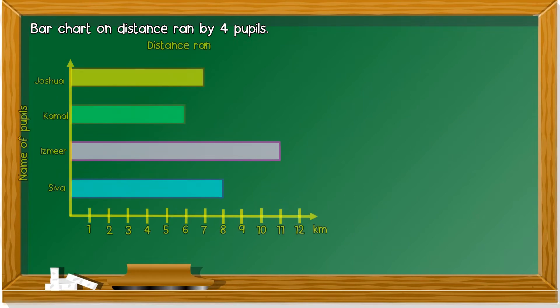Okay class, let's take a look at this bar chart. This bar chart is on distance, jarak, run, yang di lari, by four pupils. Who are these four pupils? They are Joshua, Kamal, Ismael, and Shiva.